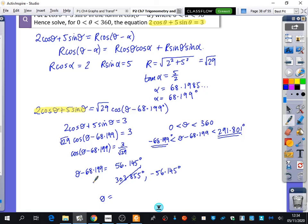So all I need to do to find out θ is the final step of adding 68.199 to those answers. If I add it to this other answer I've got here, I get 12.1 degrees to one decimal place. And then the other one, if I do 56.145 plus 68.199, I get 124.3 degrees. And I've done both of these answers to one decimal place.